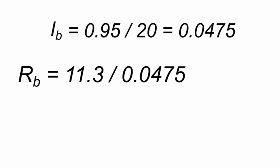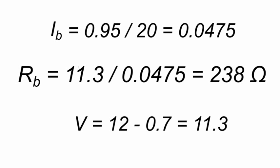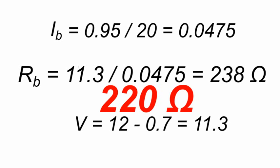The base resistor will be equal to 11.3 volts divided by the base current. Remember that the voltage is the applied voltage, 12 volts, minus 0.7 volts of voltage drop through the transistor. The base resistor is then 238 ohms, and we will use the closest commercial value, that is 220 ohms.